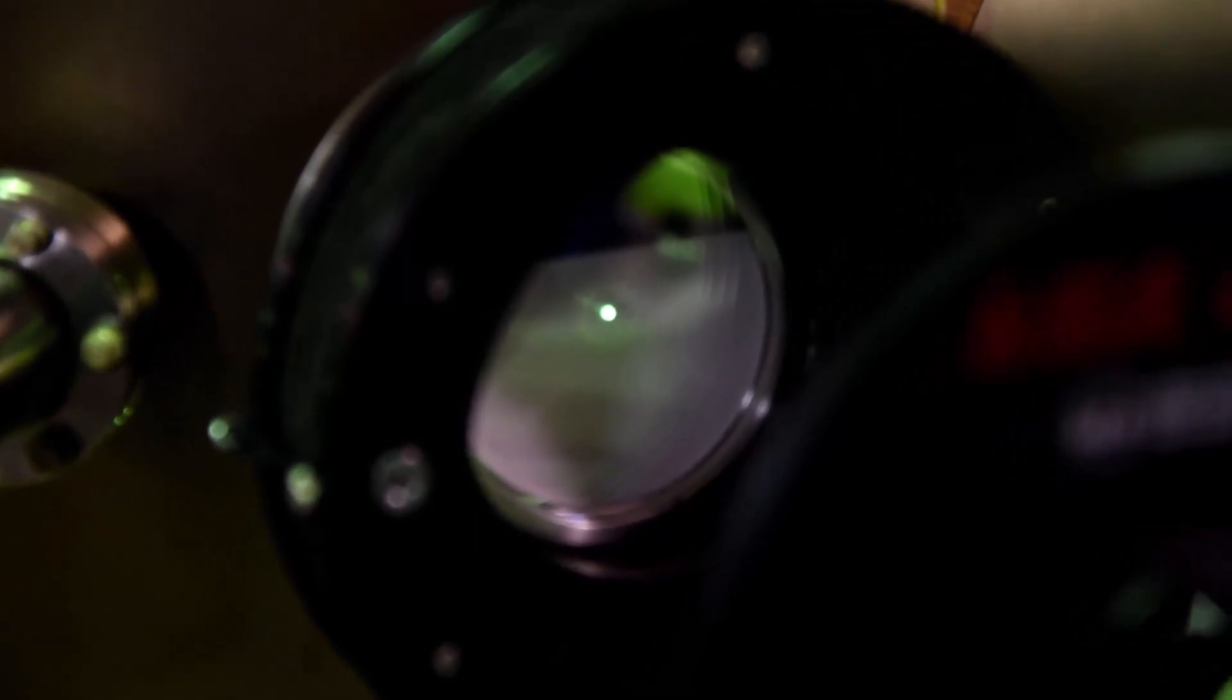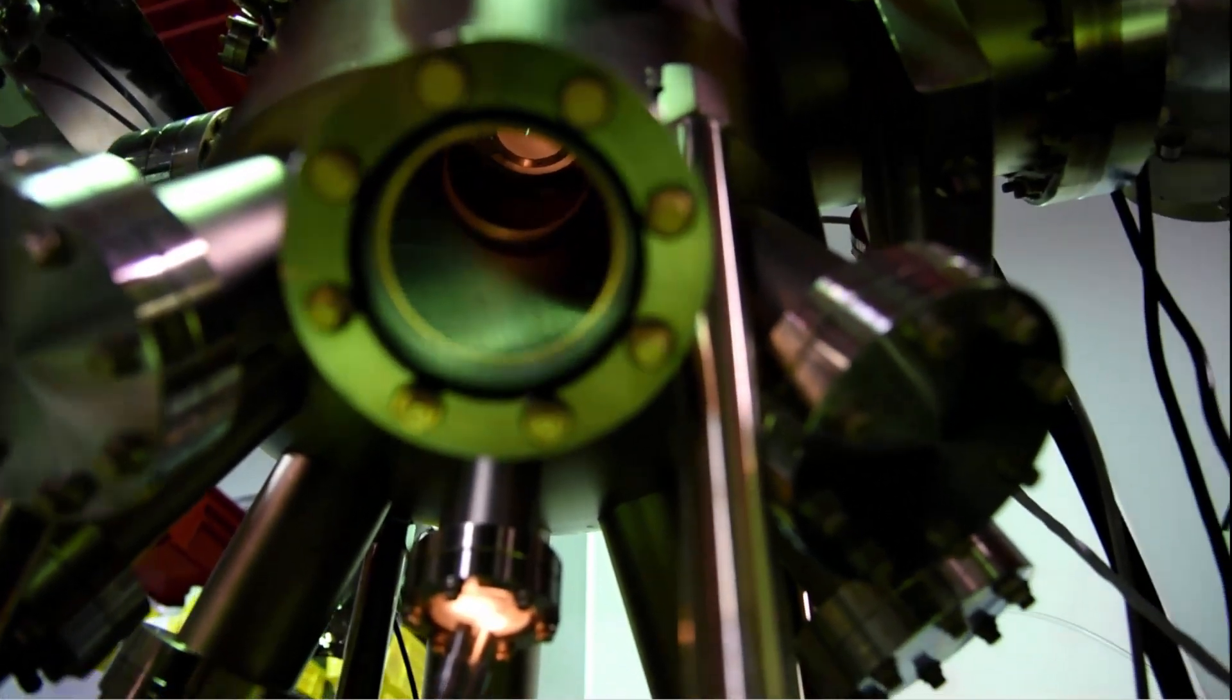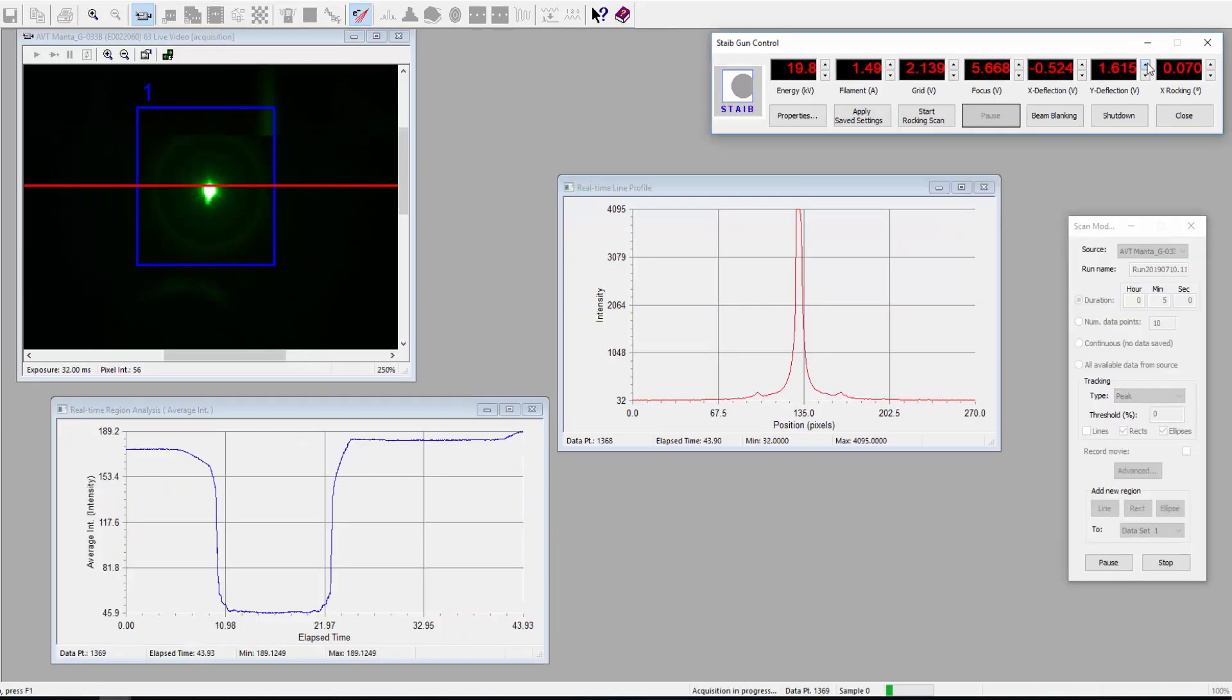When the straight through electron beam impinges on the alignment substrate, the phosphor fluoresces where the beam meets the substrate. As long as you have a viewport that allows you to see the substrate, you can see exactly what your beam looks like and where it is hitting the sample.